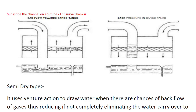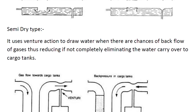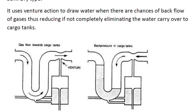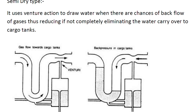Moving to the semi-dry type — here is the diagram showing the construction and functioning under both conditions. The main difference with the previous type is that it uses venturi action to draw water when there are chances of backflow of gases, thus reducing — if not completely eliminating — water carryover to the cargo tank. It does not completely eliminate water carryover to the tank; this is the drawback of the semi-dry type, please remember this.